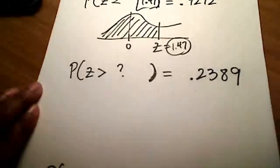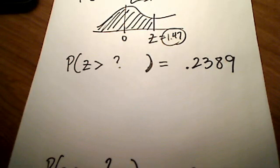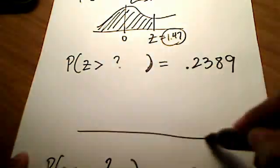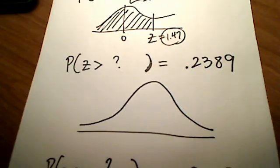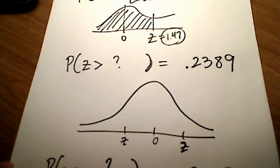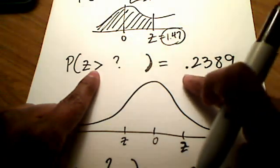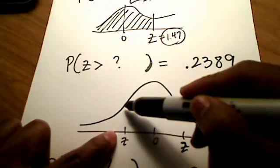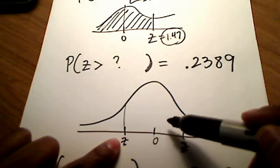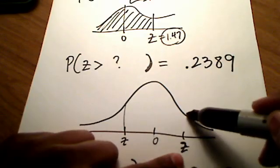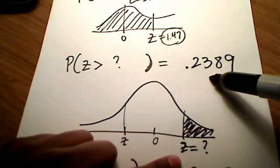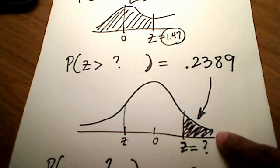The last two examples are slightly different from the first two, because that's a greater than symbol — meaning we're shading to the right this time. If 0 is sitting in the middle, I'm looking for a z-score that if I shade to the right gives an area of .2389. If I shaded to the right of a negative z, I'd get more than half. Since .2389 is less than half, it must be a positive z-score I'm looking for.